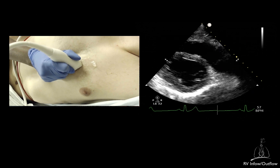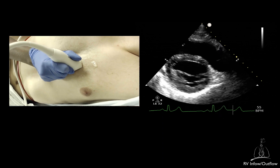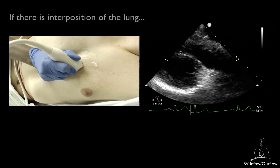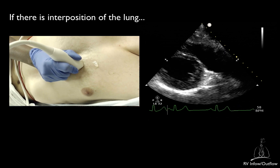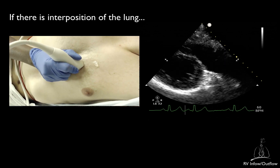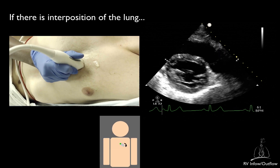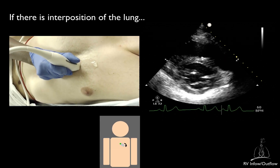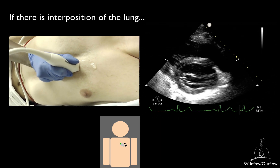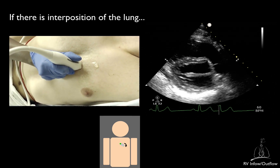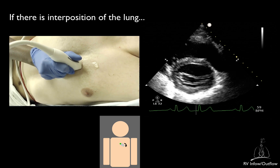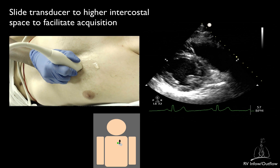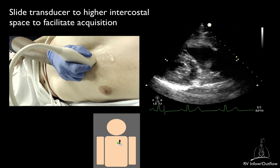In some cases, directing the ultrasound beam upwards will not allow you to visualize the right ventricular outflow tract due to the interposition of the left lung. In those cases, rotating the transducer 30 to 45 degrees clockwise from the parasternal long axis view without changing the beam tilting may allow you to visualize the tract. Sliding the transducer to a higher intercostal space may also facilitate image acquisition.